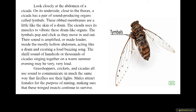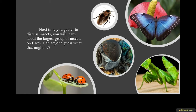The tymbals pop and click as they move in and out. Their sound is amplified, or made louder, inside the mostly hollow abdomen, acting like a drum and creating a loud buzzing song. The shrill sound of hundreds or thousands of cicadas singing together on a warm summer evening may be very loud. Grasshoppers, crickets, and cicadas all use sounds to communicate in much the same way that fireflies use their lights. Males attract females for the purpose of mating, making sure these winged insects continue to survive.